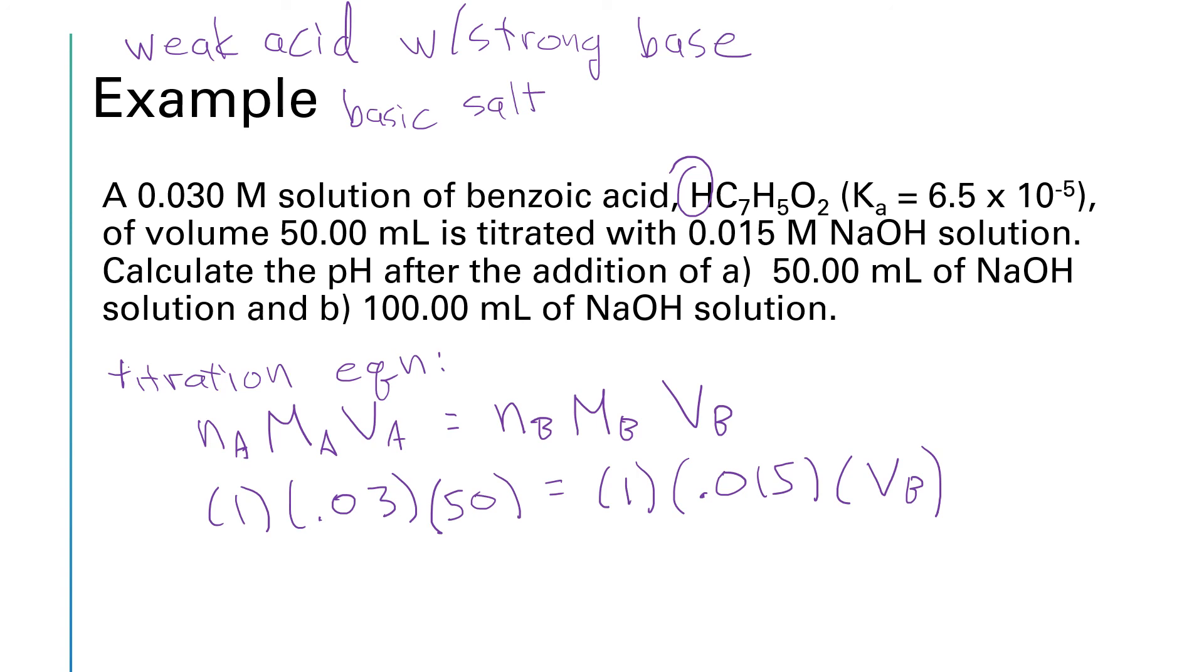So let's see. On the right hand side, I have one times 0.015, which is just 0.015. So I need to divide both sides by that. So I'll have 0.03 times 50 divided by 0.015 to give me V sub B. And so 100 milliliters will be equal to the volume of base added in order to reach that equivalence point. So that tells us in part A, we are halfway to that equivalence point. And in part B, we are all the way at the equivalence point.